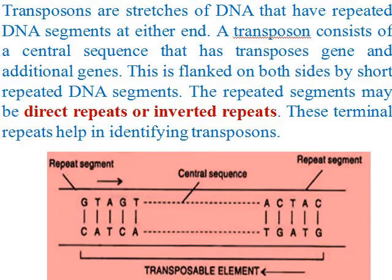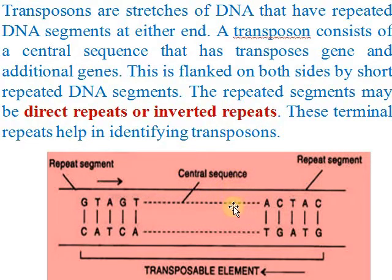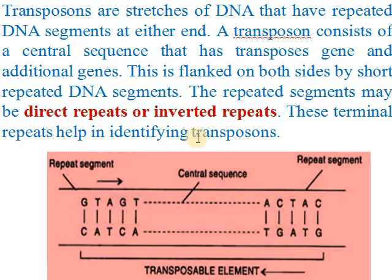If we look at the jumping gene structure, we have a central sequence here. The central sequence is the coding region, which means it codes for transposase enzyme or other genes. On either side, we have repeated segments. These repeated segments are unique for transposons.